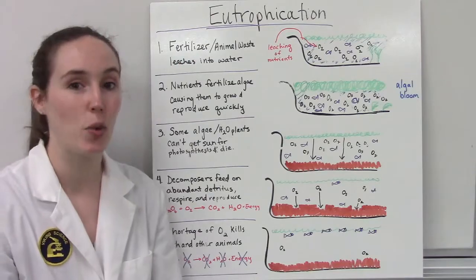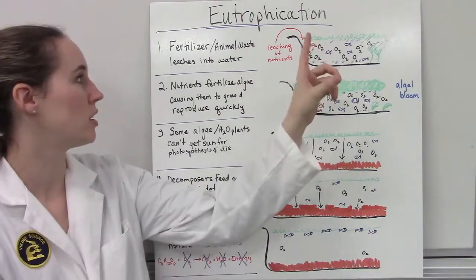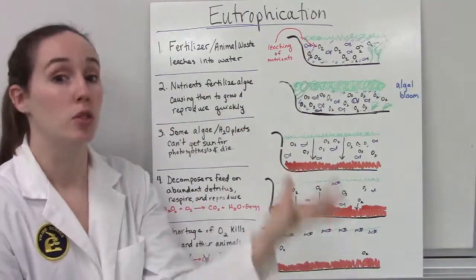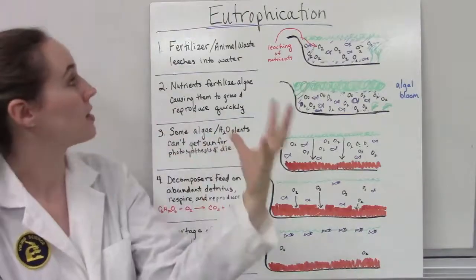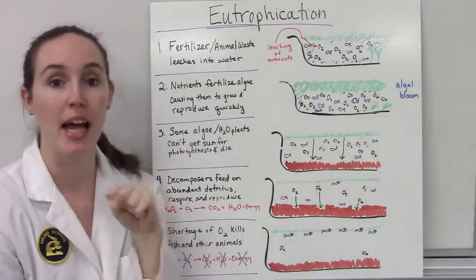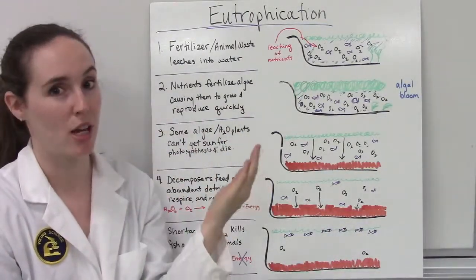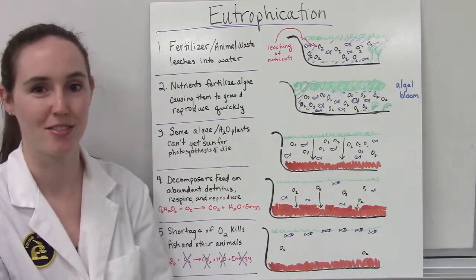The easiest way to prevent eutrophication is to reduce over-fertilizing and to ensure that farmers handle and process animal waste properly.